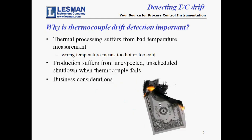Drift detection is important for two reasons. The first reason is that thermal processing suffers when the control temperature is not a true temperature. The second reason is that the chemical reactions that cause drift eventually cause the thermocouple to burn out or break. An open thermocouple shuts down the heat and brings production to a halt. Both faulty processing and halted production are important business considerations for thermal processors.